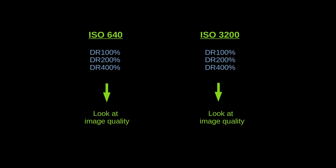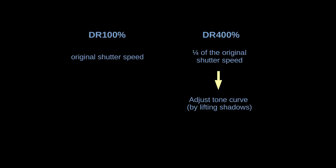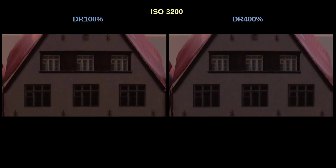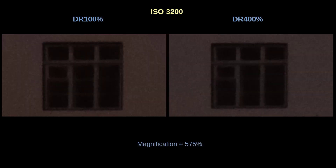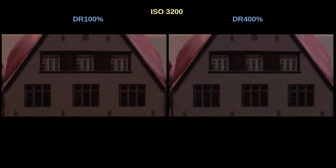I had taken the previous photos at ISO 640. Let's jump to a high value of 3200 to see how the shadows behave when shadows are lifted at DR 400% relative to DR 100%. It seems to me that the shadows might be a little darker for the DR 400% photos, but I'm not seeing differences in noise. The two photos seem to have about the same amount of grain. So I cannot seem to confirm the belief that when you use DR 400% you will ruin your shadows because of the lifting of the tone curve.